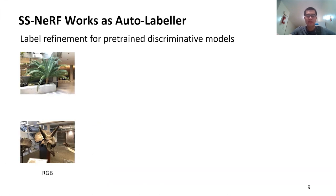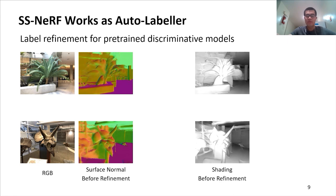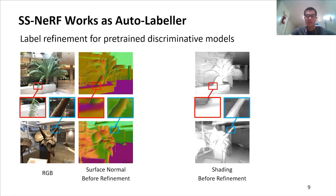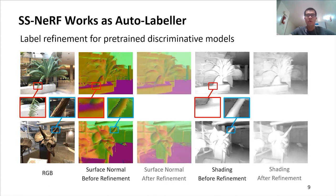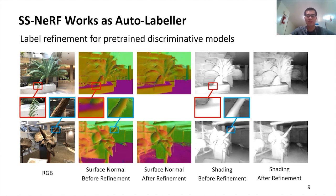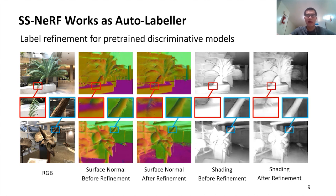Finally, there's an interesting application where SSNRF can serve as an auto-labeler in the real world. When we use a pre-trained discriminative model to label the images, the predictions would have obvious flaws. To solve this problem, we train an SSNRF model using the flawed annotation. With the geometry information, the SSNRF can correct this inconsistency during optimization, making the labels more accurate.